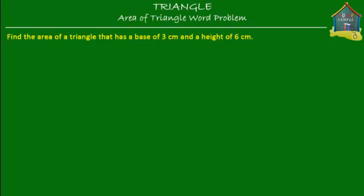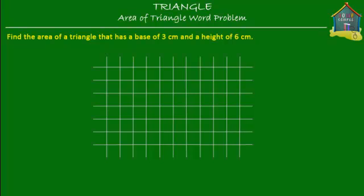So how about we draw the triangle first? I'm going to take a square grid here and draw a triangle that has a base of three centimeters and a height of six centimeters. Now, do note that each of these little squares in the grid is one centimeter — the side is one centimeter. So the length is one centimeter and the width is also one centimeter.